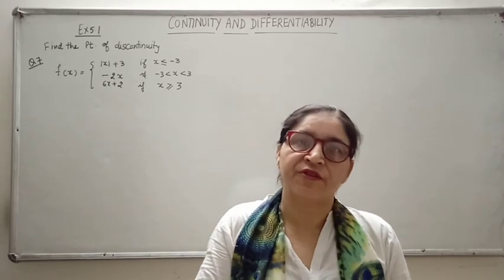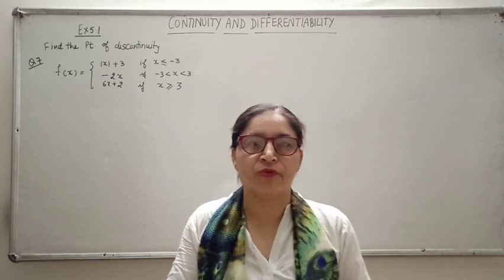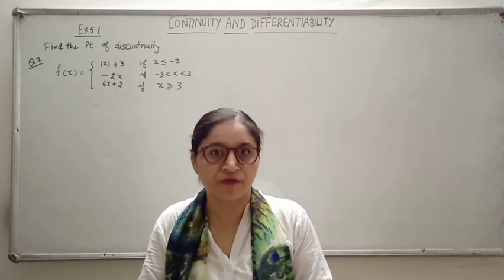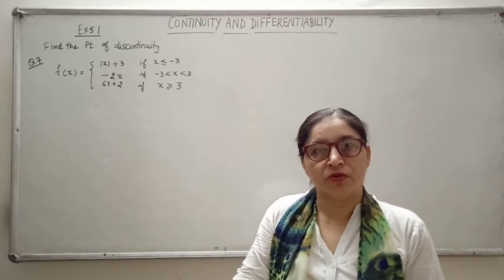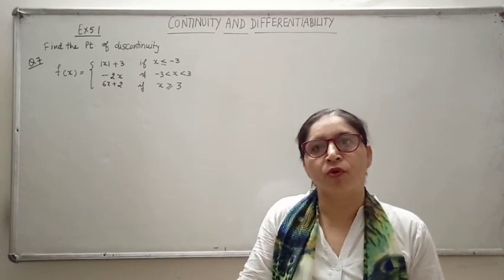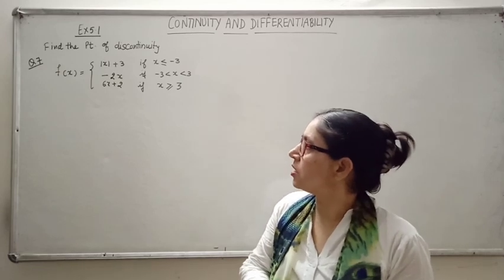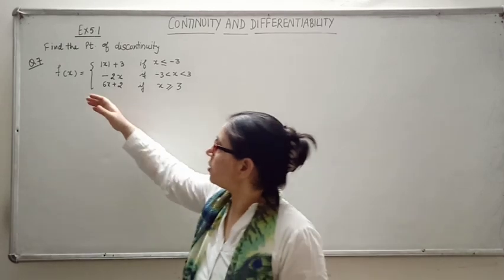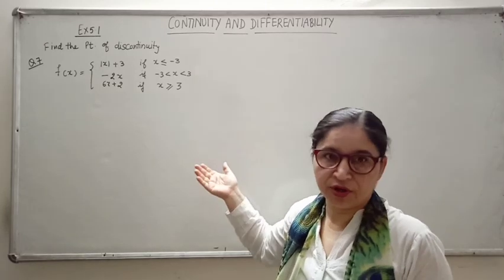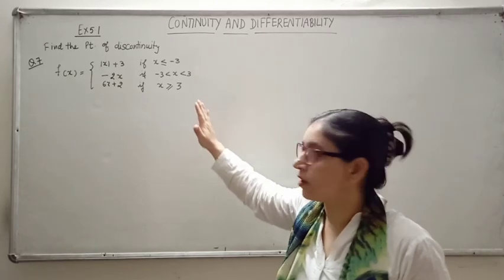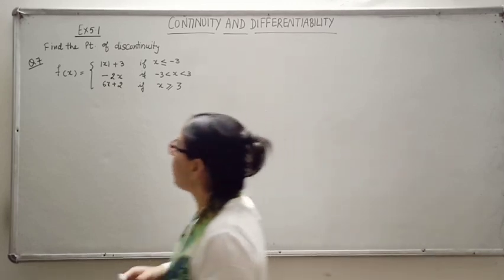Hello students. In my previous lecture I explained what continuity is and how we can find out for a given function whether it is continuous or not. So today we will try more questions to check continuity. In this series we are checking question number 7: what is the point of discontinuity? If this given function is discontinuous anywhere, you have to find out that point of discontinuity.